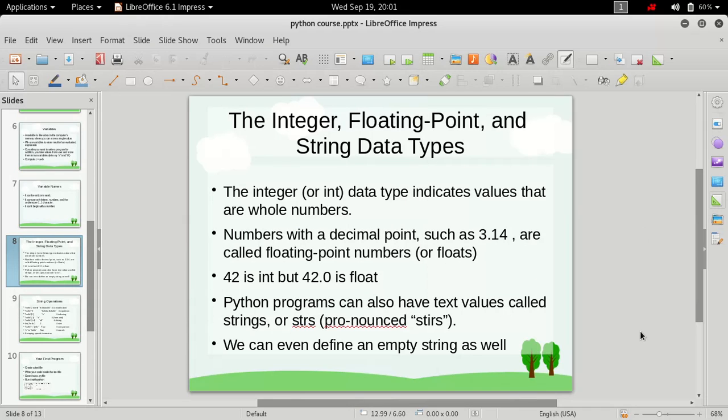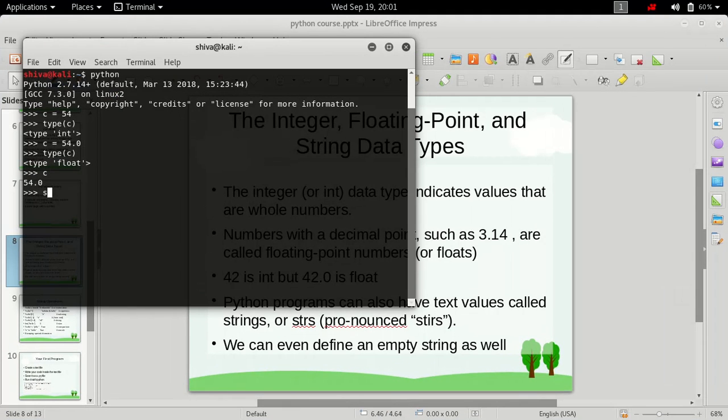Python programs can also have text values called strings. The third data type is string. You can define a variable, let's say string_variable, and give it any value you want, like 'I love Python'. We've defined a variable that stores this value, and we can simply refer to it to see the value inside.